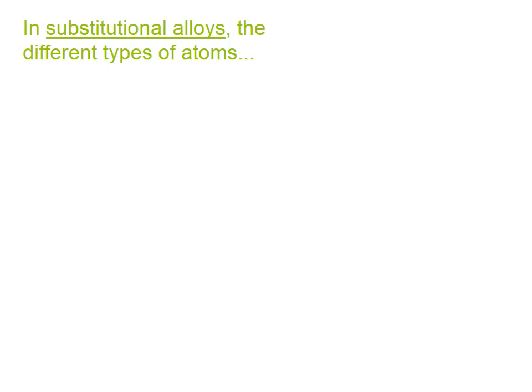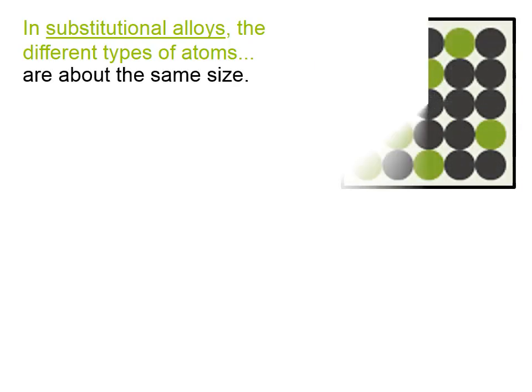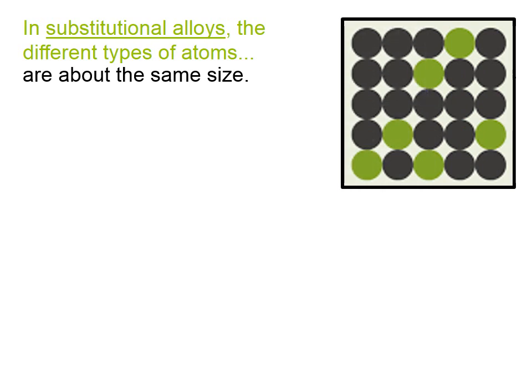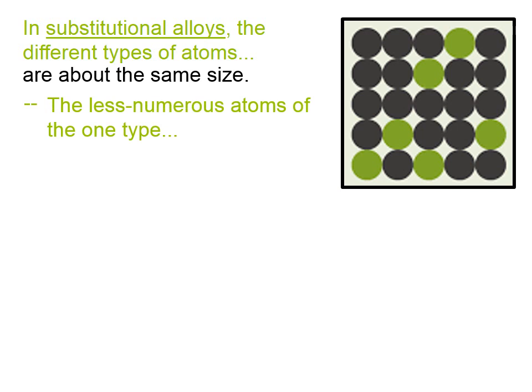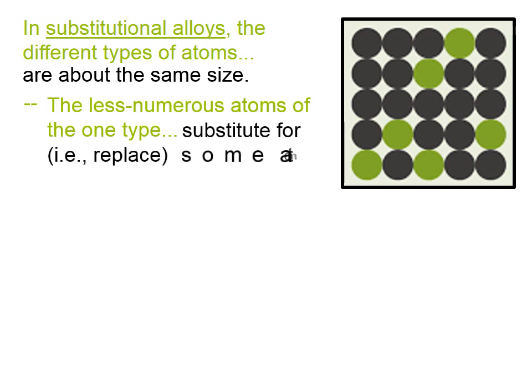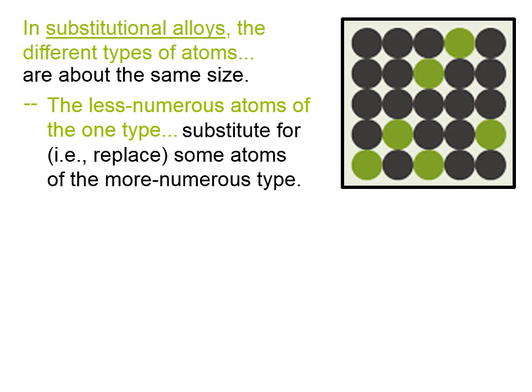In substitutional alloys, the different types of atoms are about the same size. You can see on the right here a model of a substitutional alloy. The less numerous atoms of one type substitute for — that is, they replace — some atoms of the more numerous type. Some atoms of one type are taken out and some of the other type are inserted in their place.